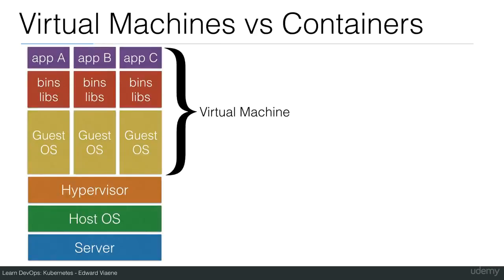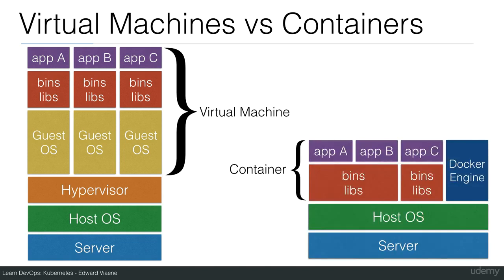Here is an overview of a virtual machine. Starting from the bottom you have your server and host operating system, then a hypervisor like Xen, KVM, or VMware, and on top a virtual machine with a guest operating system, binaries, libraries, and your application. A container works differently — you have your server and host operating system, and immediately on that you can have a container without a hypervisor, using kernel features from the host OS, but you do need the Docker engine.